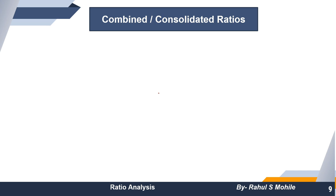I hope both types of ratios — balance sheet ratios and profit and loss ratios — are clear to everyone. Now we are moving towards the third type: combined ratios or consolidated ratios, which are a combination of balance sheet and income statement ratios. Students often get confused here, so pay close attention.